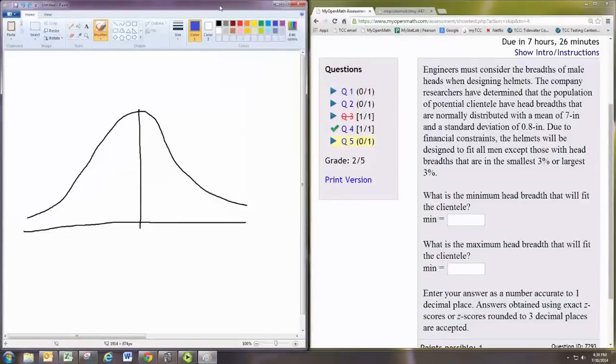In this video, we'll see how to do practice problem 5 from Experience 7. Engineers must consider the breadths of male heads when designing helmets. The company researchers have determined that the population of potential clientele have head breadths that are normally distributed, with a mean of 7 inches and a standard deviation of 0.8 inches.